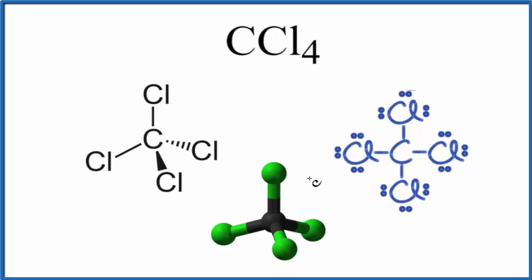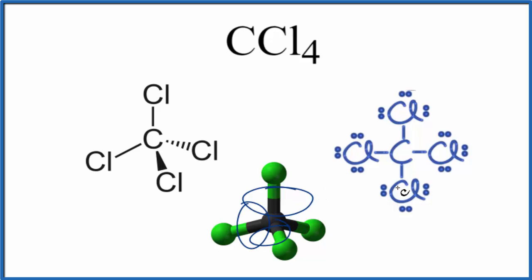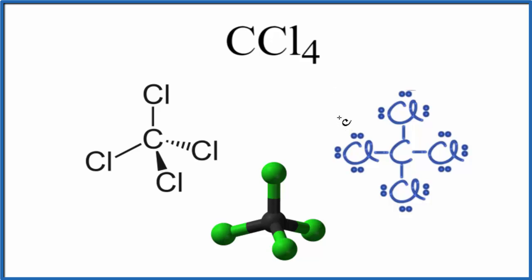If we look at the molecular geometry, we get this tetrahedral shape, and this is showing that those electrons are shared in a covalent or molecular bond. So in answer to our question, CCl4 is a covalent, also called molecular, compound. This is Dr. B — thanks for watching.